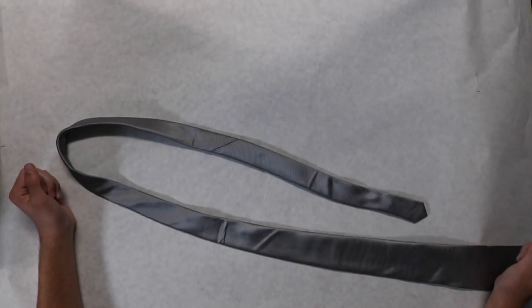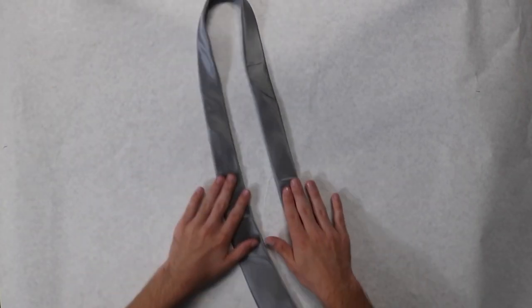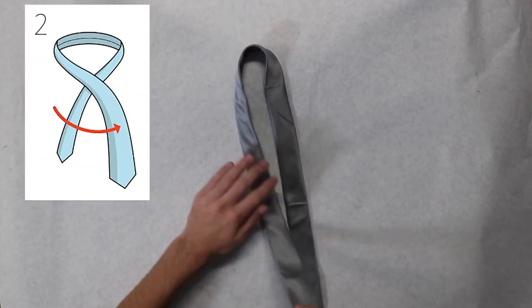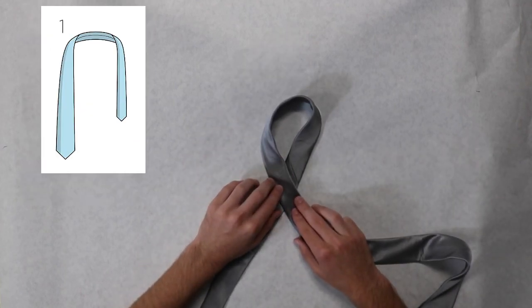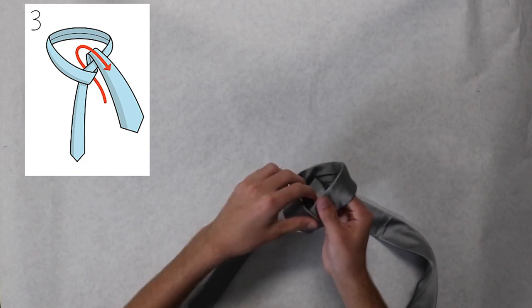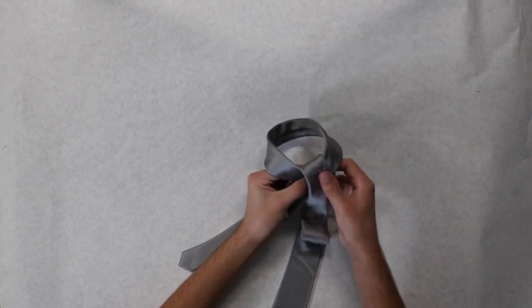This is how to make a Windsor knot. Start with the skinnier end on your dominant side. Every time you make a loop, adjust it so it's tight.